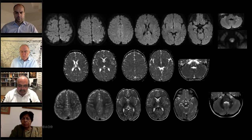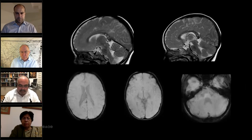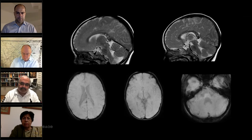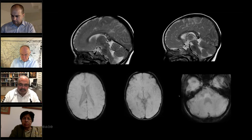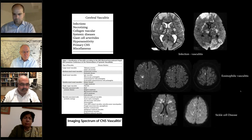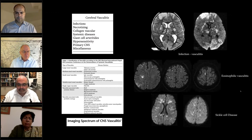On T2 sequences, the punctate hyperintensities are seen in bilateral cerebral hemispheres, more on the left, and also in the posterior fossa. On sagittal T2 images, there is involvement of the corpus callosum — the inner and middle aspects — and the callososeptal interface is involved. On SWI, no areas of blooming to suggest hemorrhagic foci or calcification. In summary: multiple tiny punctate regions of restricted diffusion suggesting cytotoxic edema, possibly vasculitis — evaluate for infectious and other causes of vasculitis.